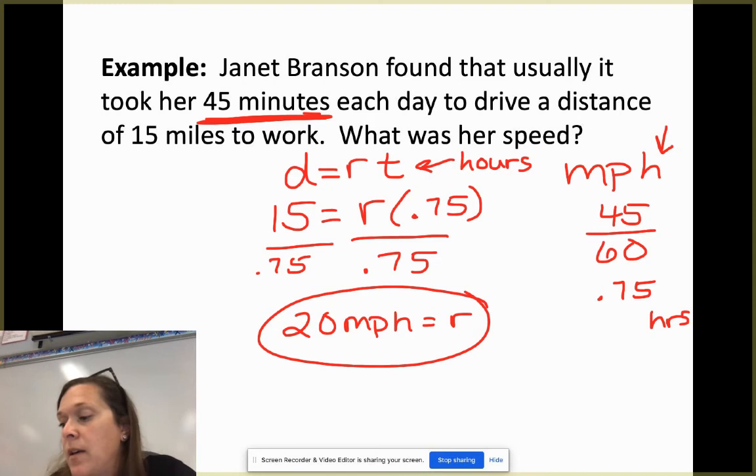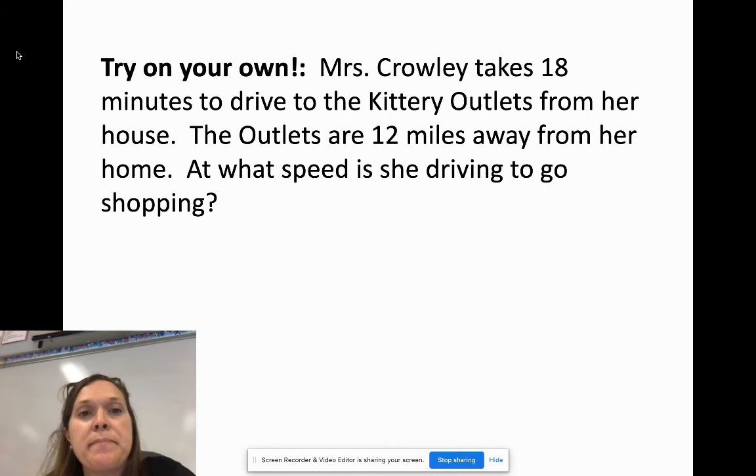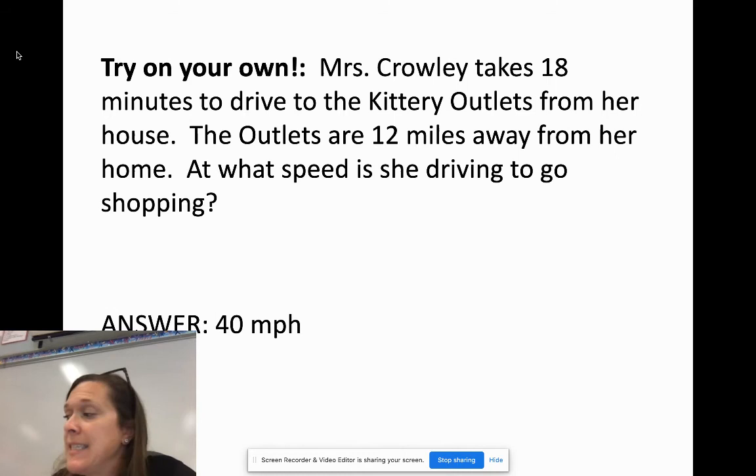Try one very similar to the last one we did. Hopefully you got an answer of 40 miles per hour. If you didn't, make sure that when you plugged in your time, you didn't use 18. You did 18 divided by 60, which is 0.3. So hopefully you plugged in 0.3 for your T and your D equals RT equation.